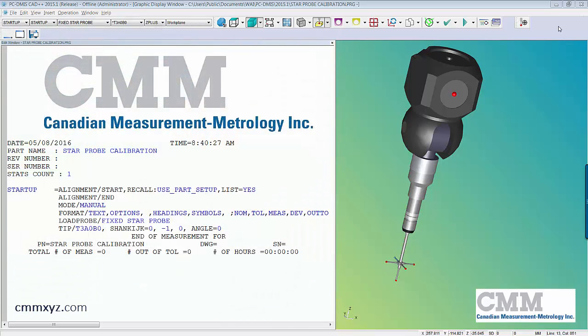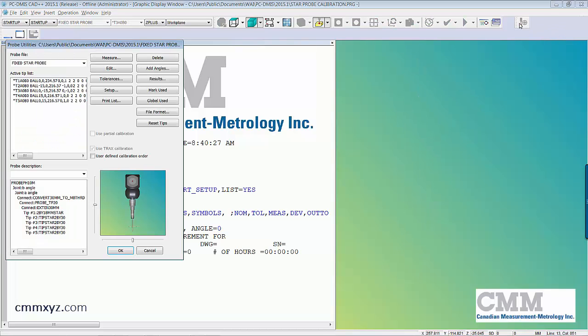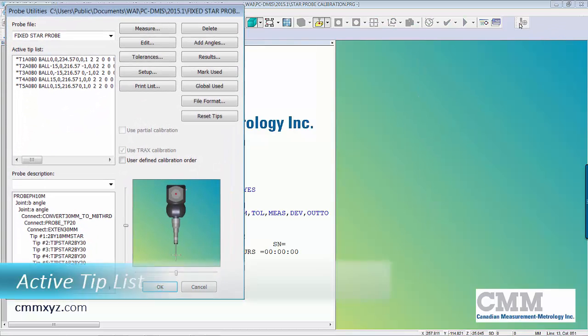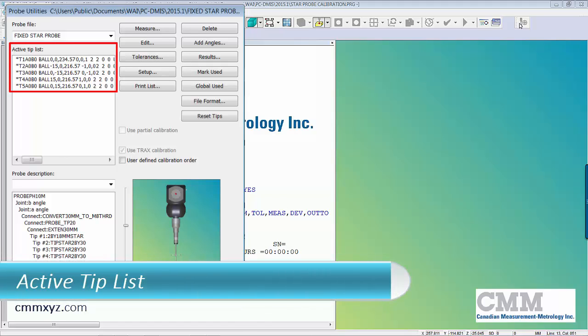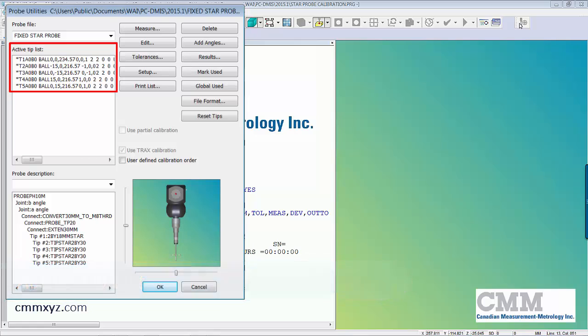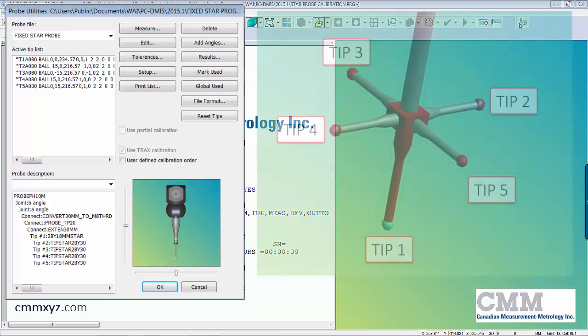First thing I want to do is have a look at our probe build. Over here on the active tip list you can see we have five tips, five active tips. It's important to know the tip assignment and I did review this in the previous video so I'll just go over it again.